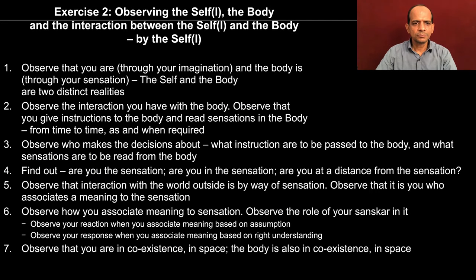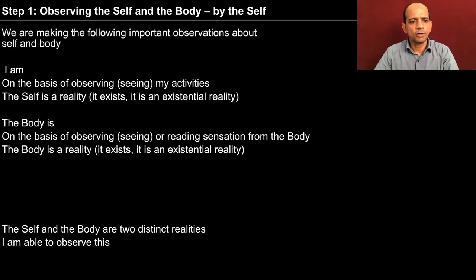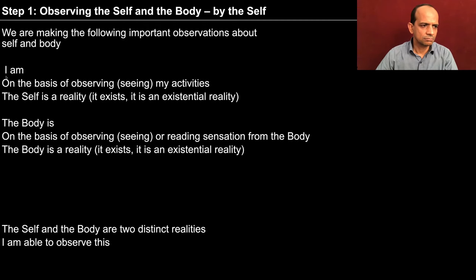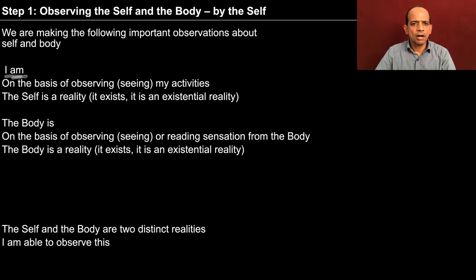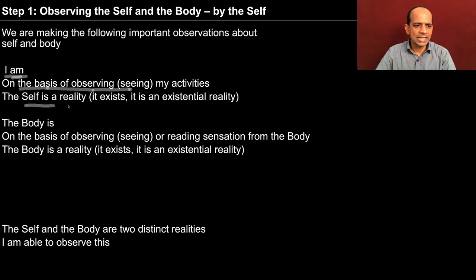There are seven steps here. We have already gone through the seven steps in our lectures and now we will try to go through them one by one and practice them. In step one, we are making the following important observations about the self and the body. One observation is that I am there — that is to say, the consciousness is there. How do I know that I am there? You will see that you are able to see that you are there on the basis of observing — that is, seeing your own activities. The self is a reality; it does exist, and I come to know of it by observing my activities.